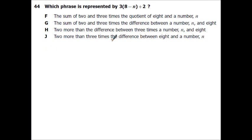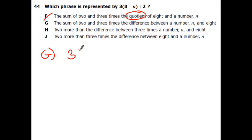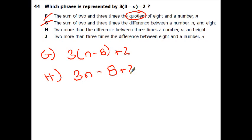Which phrase is represented by 3 times the quantity of 8 minus N, plus 2? Option F mentions 'quotient' which means divide — can't be right. G says '3 times the difference between N and 8' — that's backwards. H says '2 more than the difference between 3 times N and 8' — that would be 3N minus 8 plus 2, not right. J says '2 more than 3 times the difference between 8 and a number' — that's 3 times (8 minus N) plus 2. So J is correct.